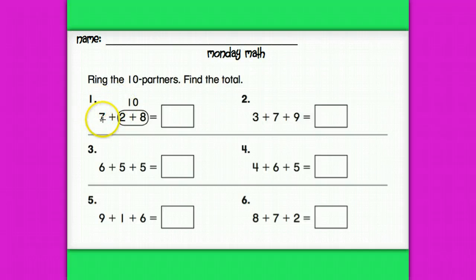So seven plus two plus eight. They drew a ring around two plus eight because that equals 10 and they wrote the 10 partner above it. Now I can easily add 10 plus seven. And what's 10 plus seven? Awesome. 17.